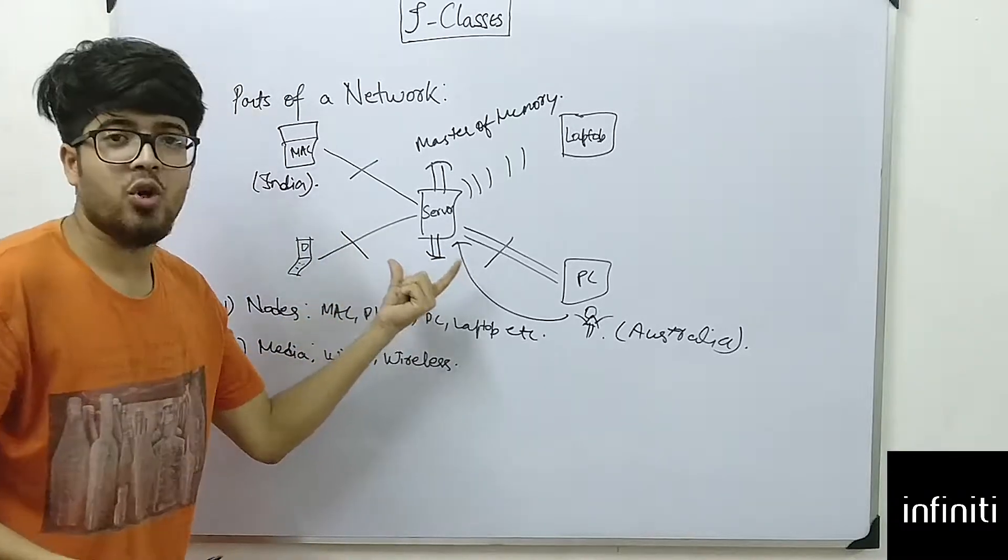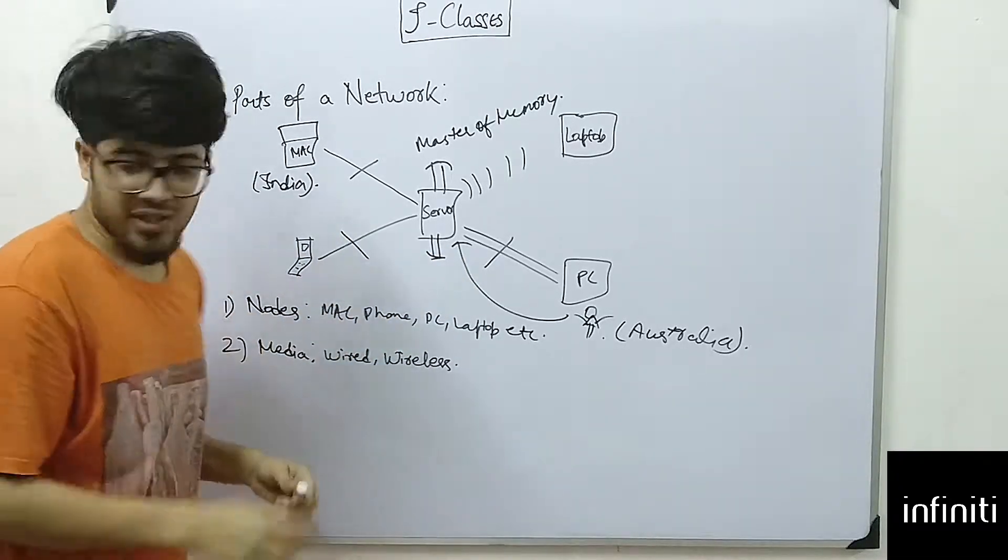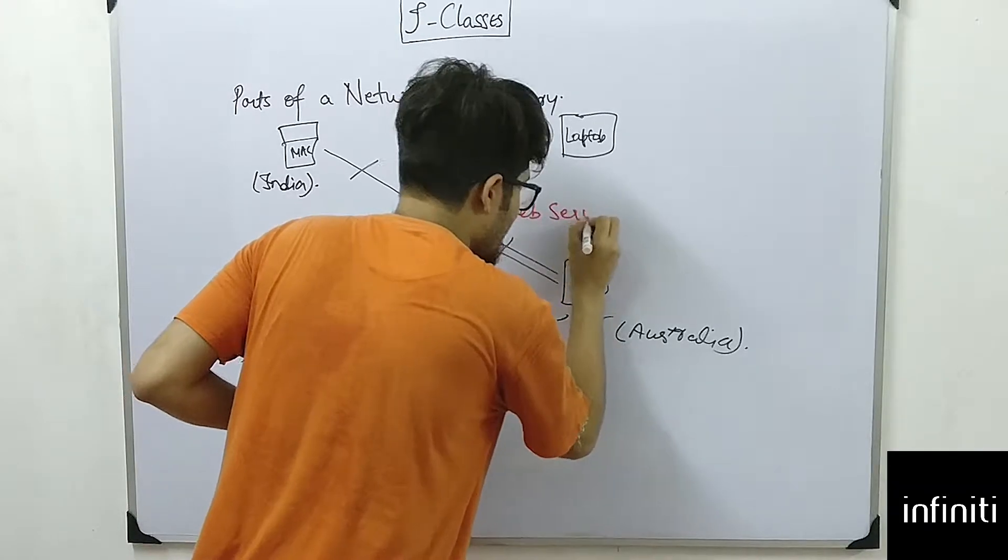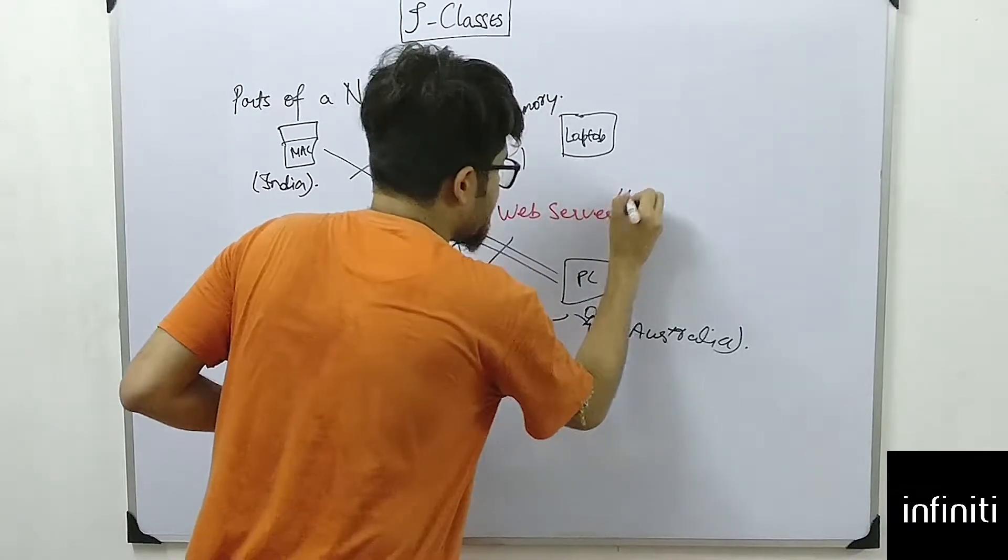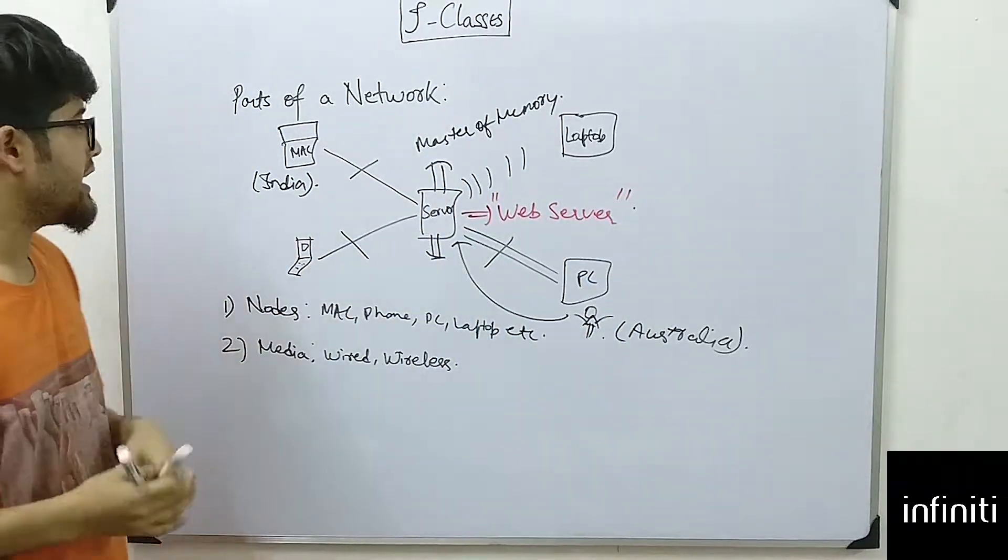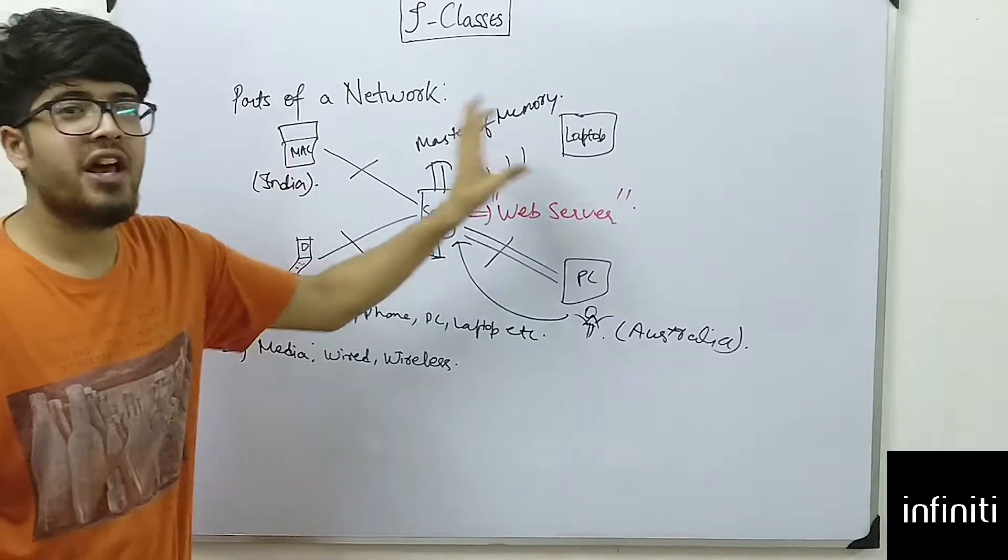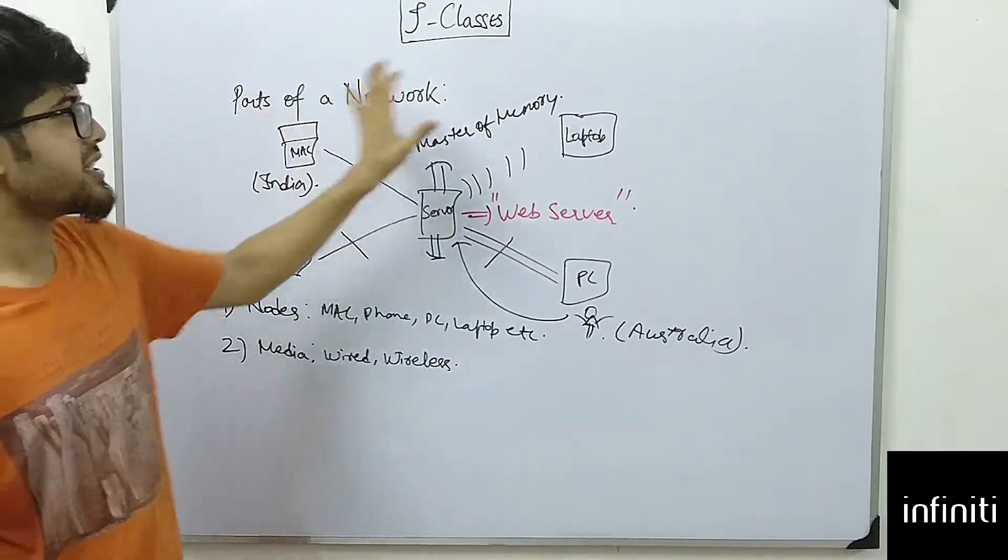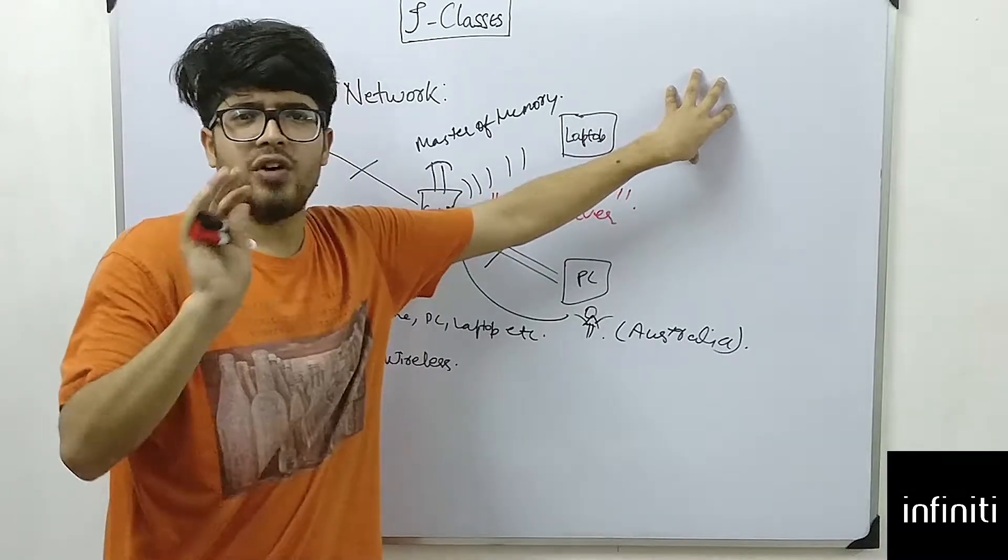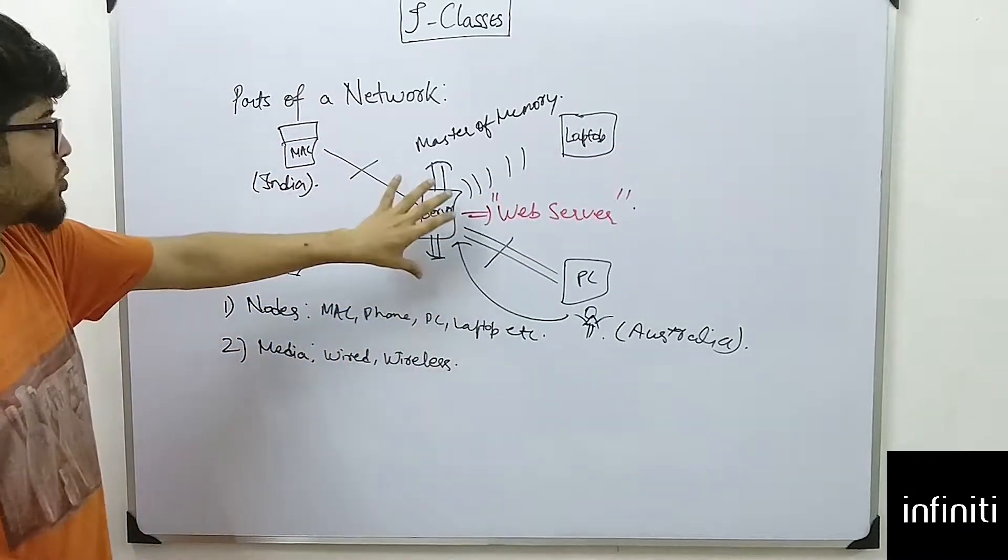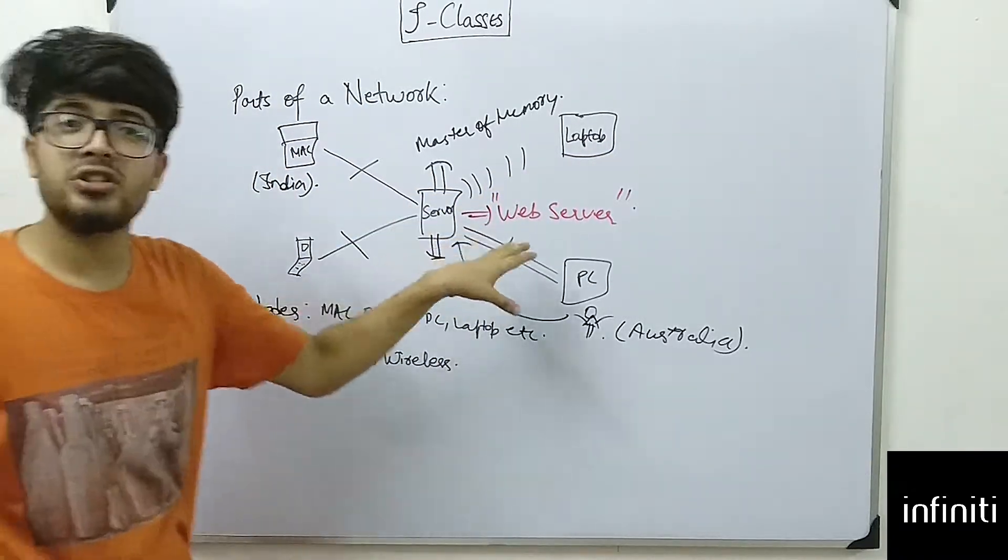The network is called a web server. This server can be called a web server if and only if it is accessible from anywhere in the world—anywhere sitting around any part of earth can access those sites.